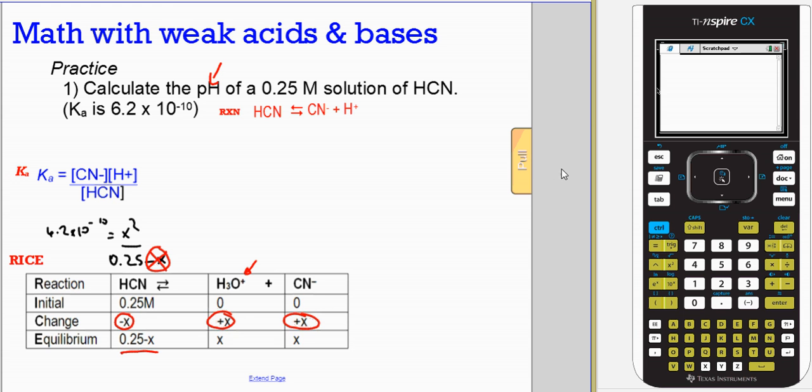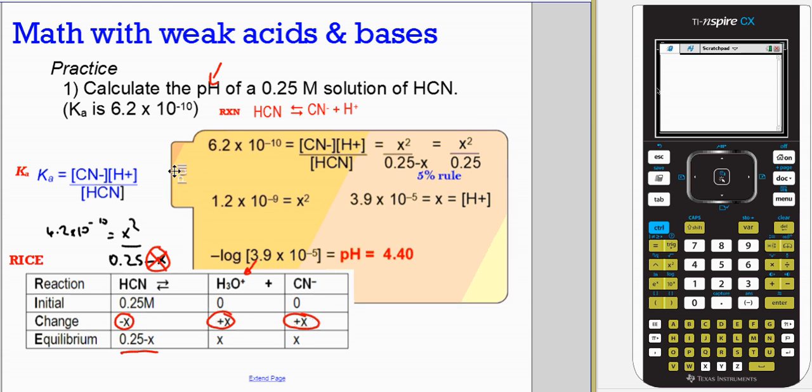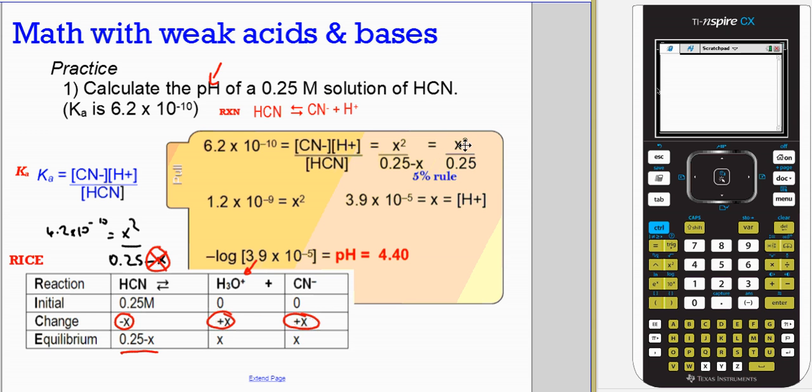So let's look at the solution. There's the rewritten formula I just spoke of. We'll then attempt to solve for x by multiplying both sides by 0.25, which yields this. The square root of that gives us this. The negative log of what our hydrogen ion concentration is gives us pH of 4.40. Pause if you need to look through that.